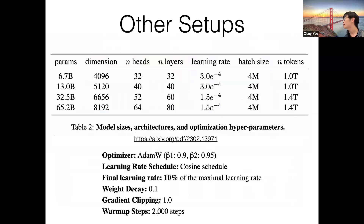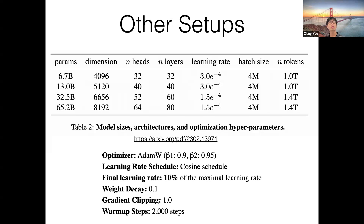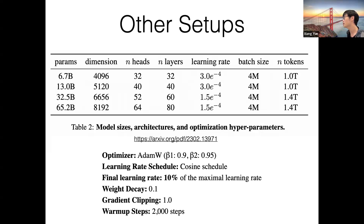Let's talk about some other training setups — hyperparameters, which may seem unimportant but are actually very important in practice. Many junior students ask me about the best hyperparameters for training or fine-tuning a model. For LLaMA 1, they have four model sizes from 6.7B to 65B. For learning rate and batch size, they use a relatively large batch size — important during pre-training because you want stable training. For example, they use 4 million tokens per global batch size.